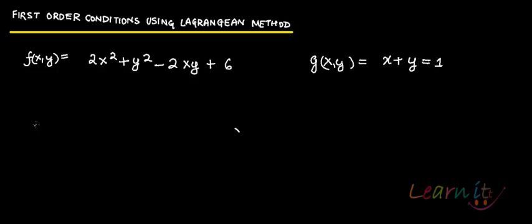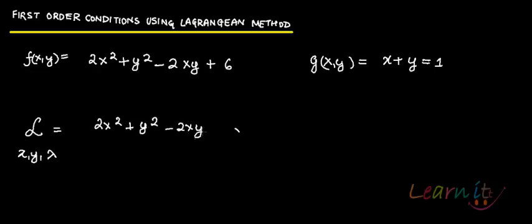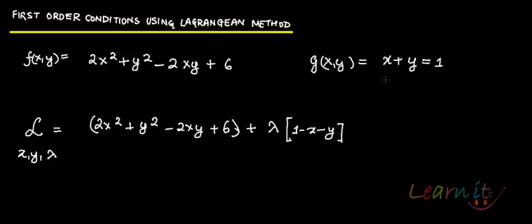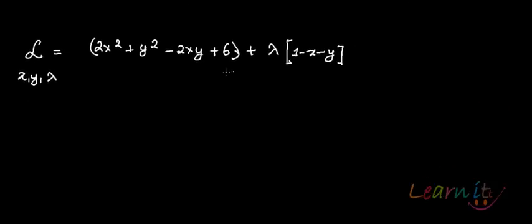You can form the Lagrangian. The method is going to find out the optimal values of x, y, and lambda such that you optimize 2x² + y² - 2xy + 6 — this is your objective function — subject to the constraint. This is the Lagrange multiplier, and you write the multiplier as constant minus variables: 1 - x - y. Why write it this way and not x + y - 1? We'll see later.